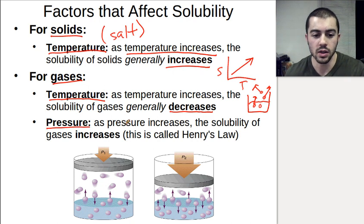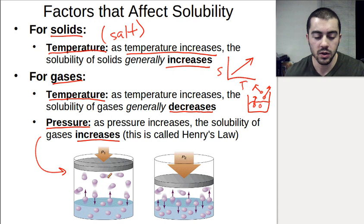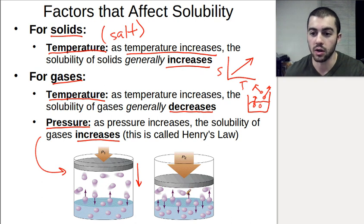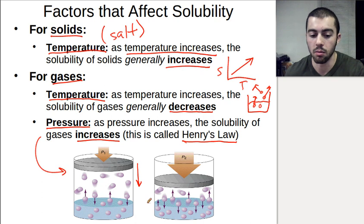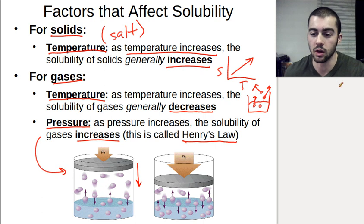For pressure of gases, if we increase the pressure, the solubility of a gas is going to increase. If we take a container with gas above a liquid and increase the pressure — like pushing a piston down — gas particles become unstable in the high-pressure space above the liquid, so it's actually more stable for them to dissolve into the liquid. This is called Henry's Law: as we increase the pressure of a gas, the solubility increases because the gas particles are happier in the liquid than pressurized in the gas space above.